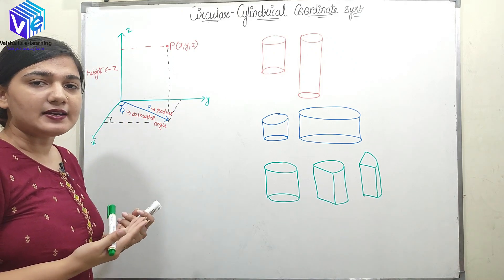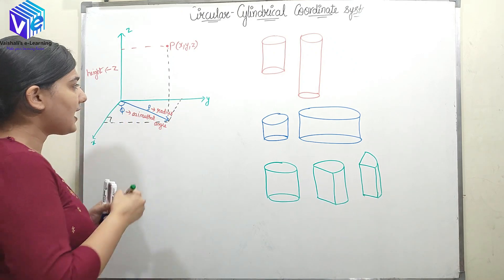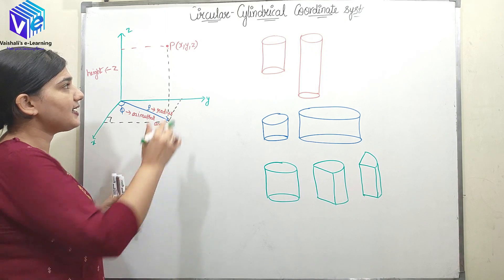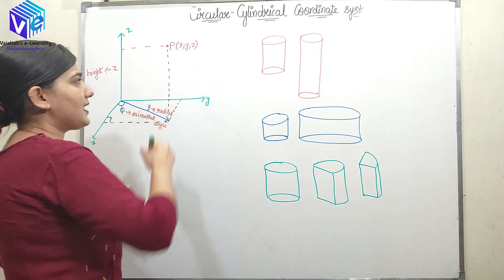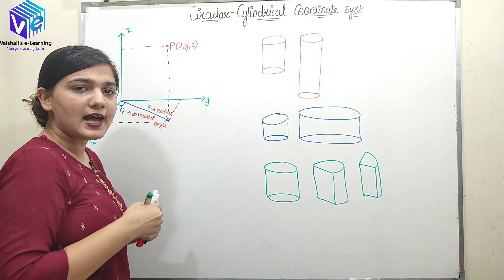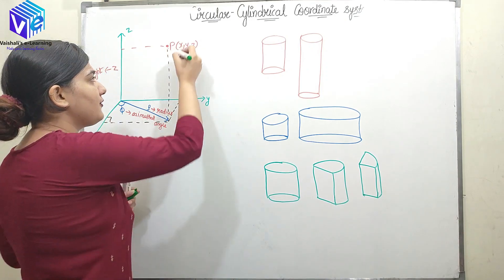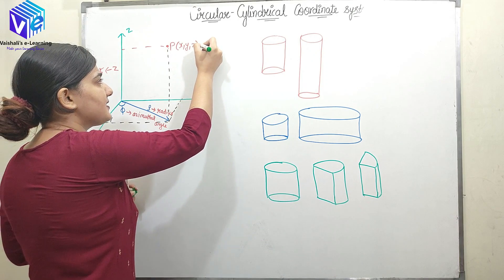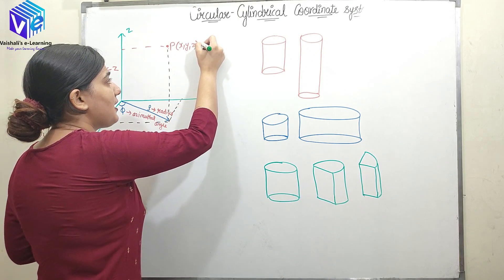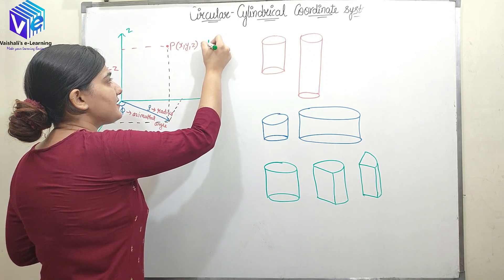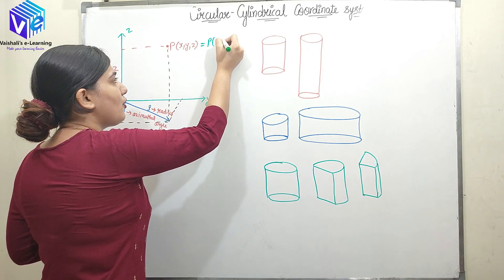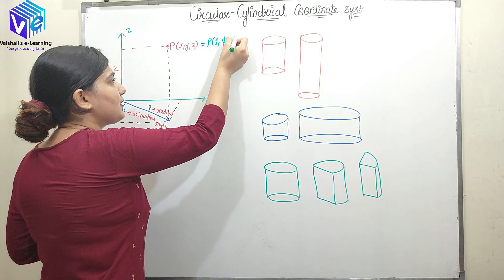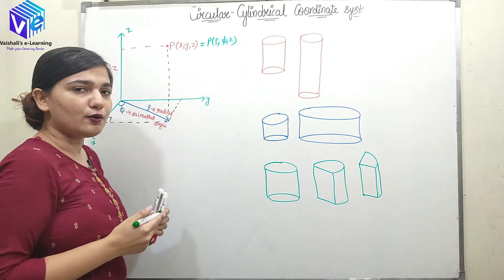What does this mean? In the x, y, z system, any point P was denoted with x, y, and z coordinates. But in the cylindrical system, I denote a point with rho, phi, and z coordinates.